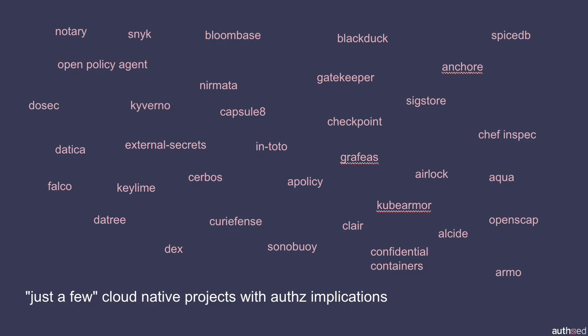For example, Clair is a vulnerability scanner. That might not seem like it has much to do with authorization, but one of the key use cases of Clair is to prevent folks from deploying containers into production that have known vulnerabilities. In the abstract, that's effectively authorizing whether software can actually be deployed on a system — which is how you can find complete mixed messaging and confusion in the ecosystem.